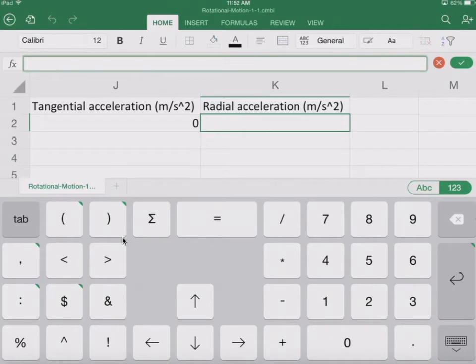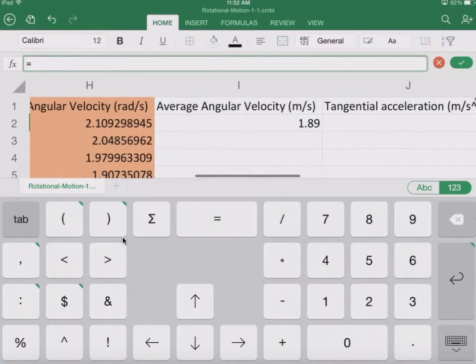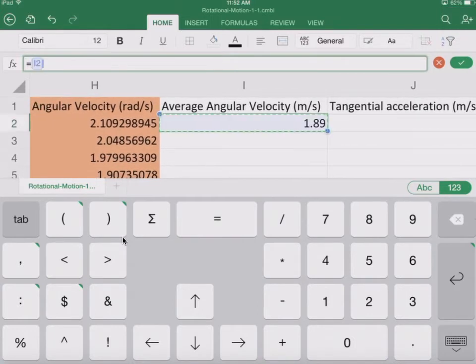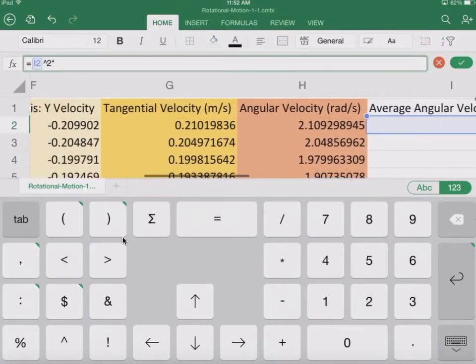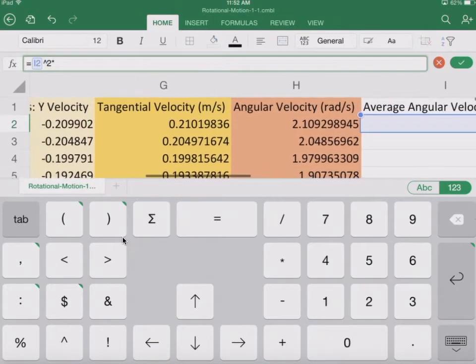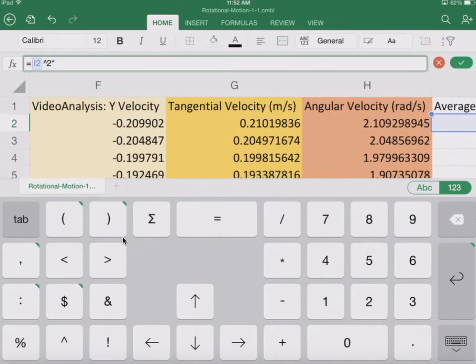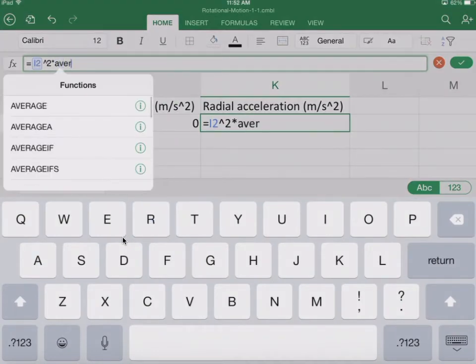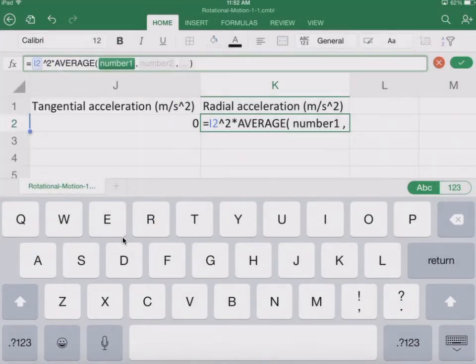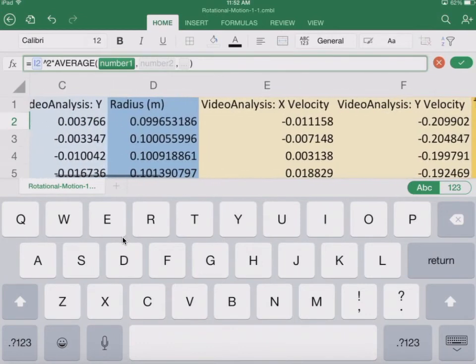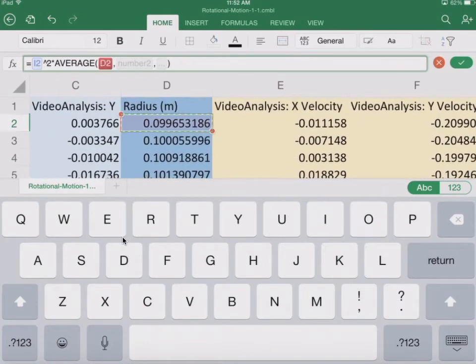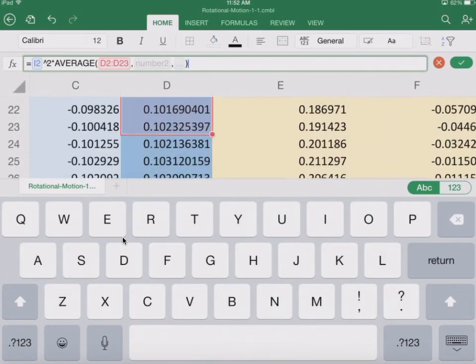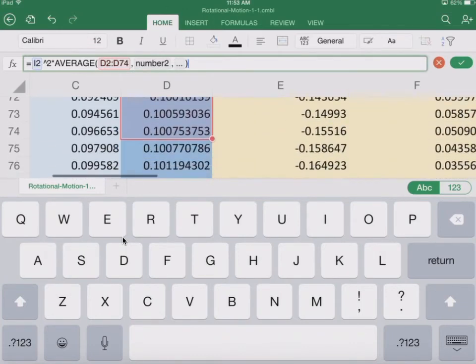So we're going to say that this is equal to our angular acceleration squared times the radius. And we didn't necessarily take the average of the radius, but we're going to do it now. So I'm just going to say average, A-V-E-R. So the average of the radius, and here's our radius here. And I'll just drag down.